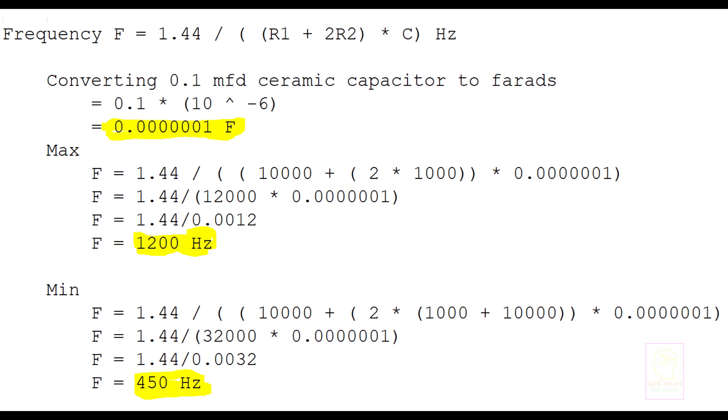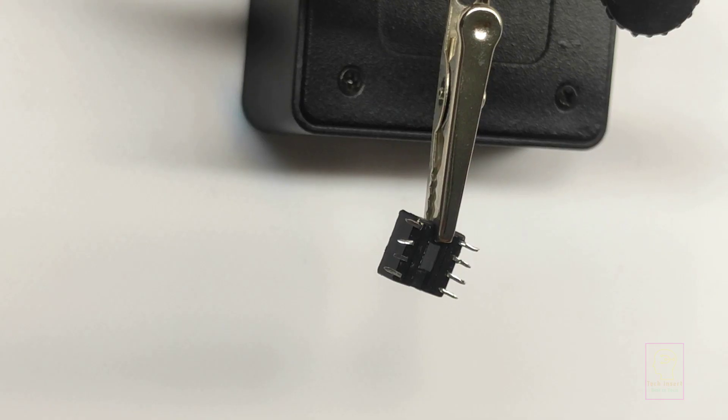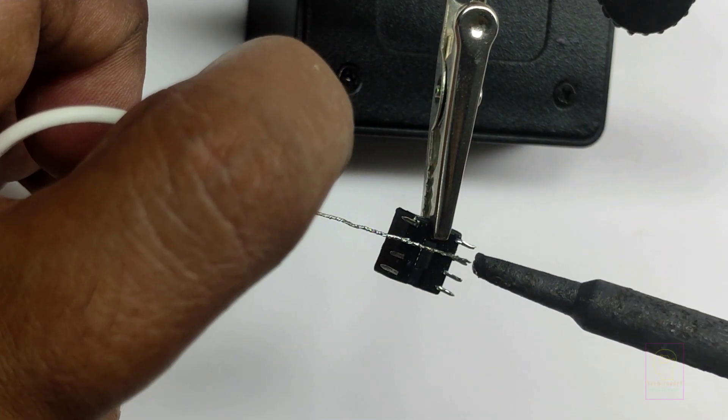This comes between 20 Hertz to 20 kilohertz, which is the human hearing frequency range. These are the components used for assembling.